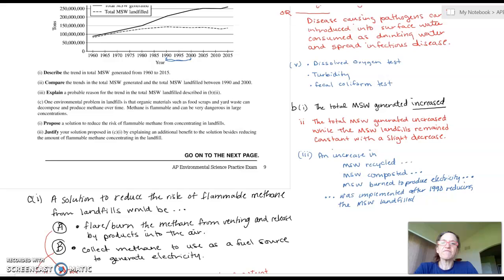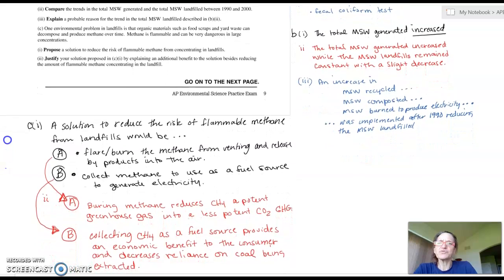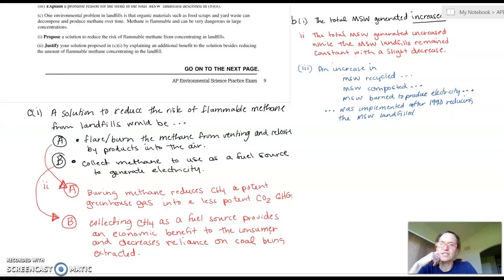Moving on to C, one environmental problem in landfills is that organic materials, such as food scraps and yard waste, can decompose and produce methane over time. Methane is flammable and can be very dangerous in large concentrations. It has a very high greenhouse gas factor. Propose a solution to reduce the risk of flammable methane from concentrating in landfills. The one method we've talked about in different cases is that a solution to reduce the risk of flammable methane from landfills is to flare or burn the methane from venting and then releasing the byproducts into the air. Byproducts are still greenhouse gas, carbon dioxide, but carbon dioxide is going to be a less potent greenhouse gas than methane. Another thing you could do is collect the methane and use it as a fuel source to generate electricity or turn a turbine.